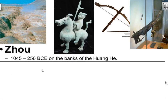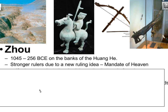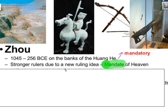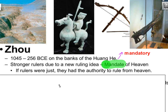Later on in the Zhou dynasty, on the banks of the Huang He, strong rulers arose due to a new ruling idea — the Mandate of Heaven. 'Mandate' means that something is mandatory, you have to do it. The Mandate of Heaven basically says that if a ruler was just and fair, they had the authority to rule — not just because they were powerful military conquerors, but because they had the rule from the gods.